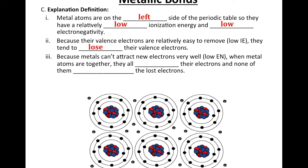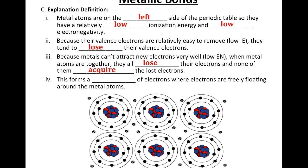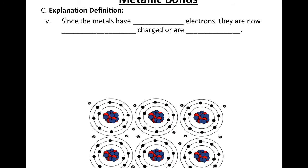Because metals can't attract new electrons very well — low electronegativity — when metal atoms are together they all lose their electrons and none of them acquire the lost electrons. The low ionization energy says they lose electrons; the low electronegativity says they're not going to acquire any that were lost by anyone else. That's how we form the sea of electrons — all these lost electrons just stay lost and float around freely as the sea of electrons.